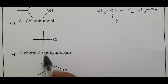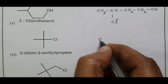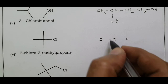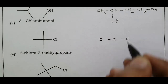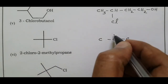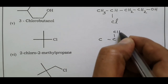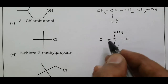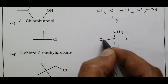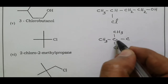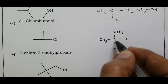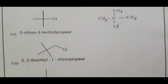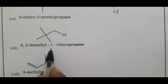2-chloro-2-methylpropane — tertiary butyl chloride. Three-carbon propane chain: carbon–carbon single bonds, numbered 1, 2, 3. Carbon two has one methyl substituent and the chlorine at position 2.